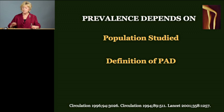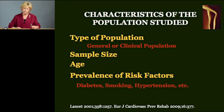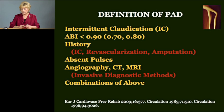Prevalence depends on the population studied as well as the definition of PAD. In terms of the characteristics of the population studied, the type of population is important — whether it's a general or a clinical population — the sample size, the age of that population, and the prevalence of risk factors in that population. In this case, the risk factors for PAD being diabetes, smoking, hypertension, kidney disease, etc.